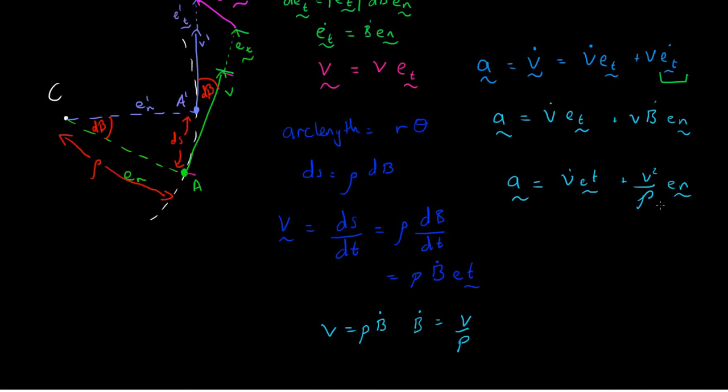Does this make sense to us? Well, if you remember that the centripetal acceleration is v squared over r, and remember that rho is our radius of curvature, we can see that the acceleration in the normal direction, i.e. towards the center of the curve, is v squared over r. So we're happy that this result is what we're expecting it to be.